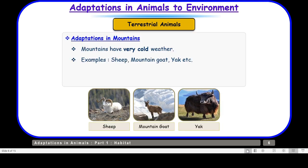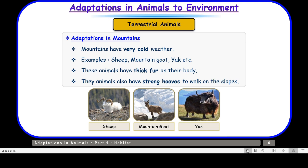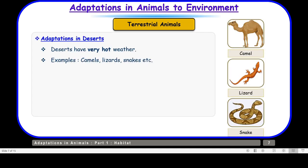Now let us take up terrestrial animals found on mountains. Snowfall is very common in winters on mountains and they also have very cold weather. Animals like sheep, mountain goat, and yak are found on mountains. These animals have thick fur on their body that protects them from cold weather, and they have strong hooves so they can walk on mountain slopes without falling.